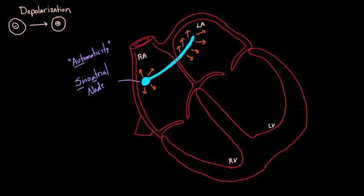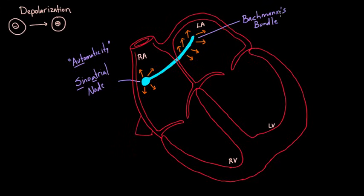So you get depolarization happening both in the right atrium and the left atrium in a coordinated way — very evenly. This band, or bundle, is called Bachmann's bundle. So now we've named two things: the sinoatrial node and Bachmann's bundle.